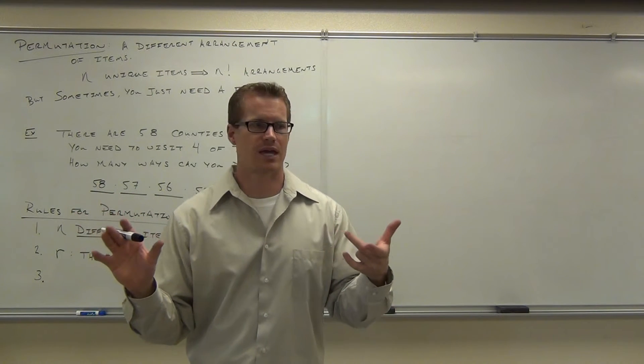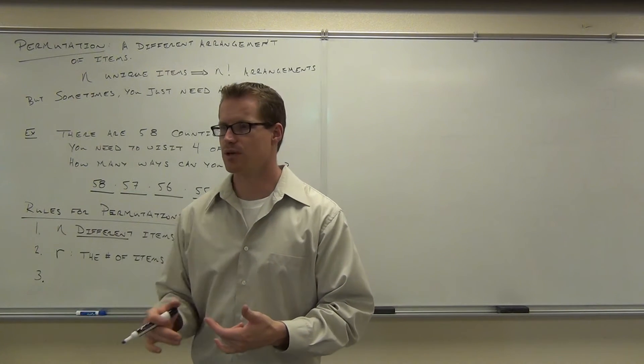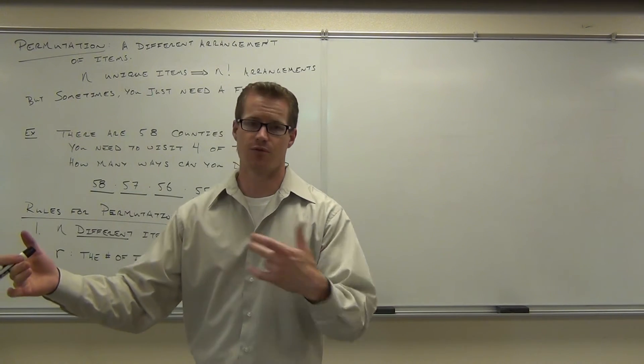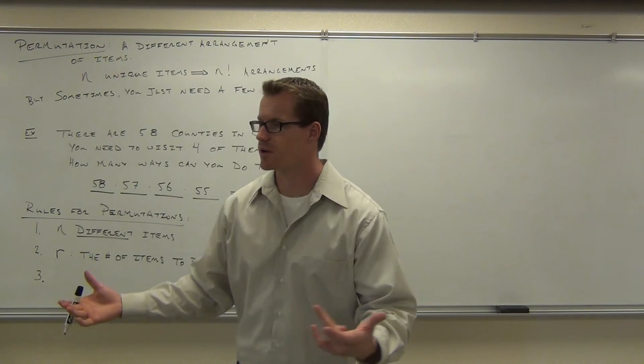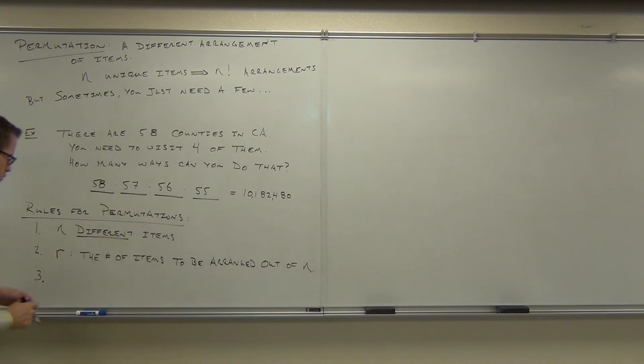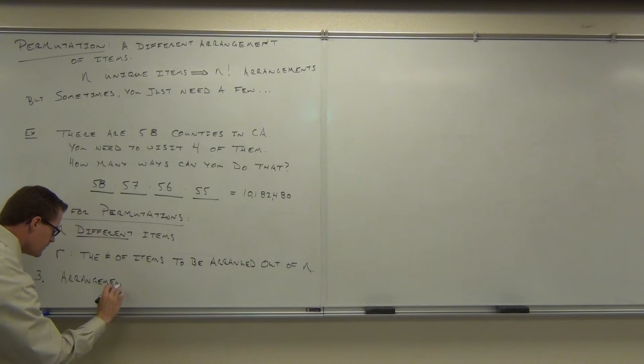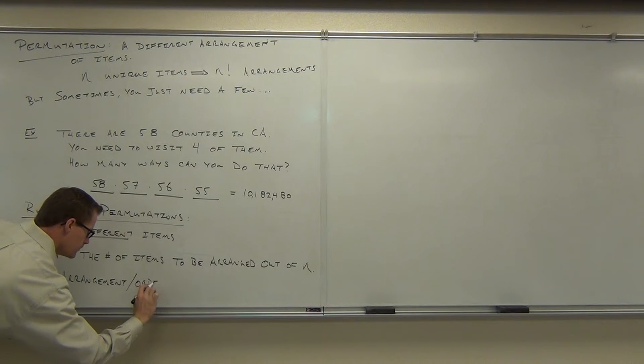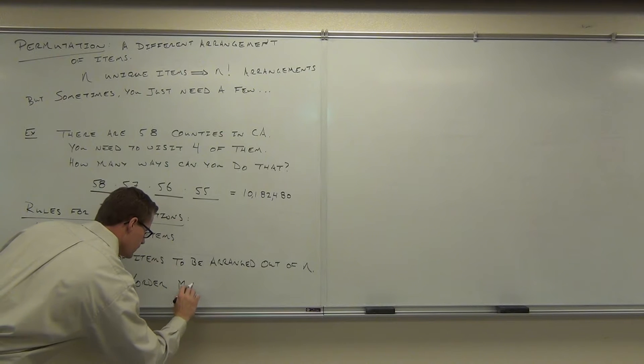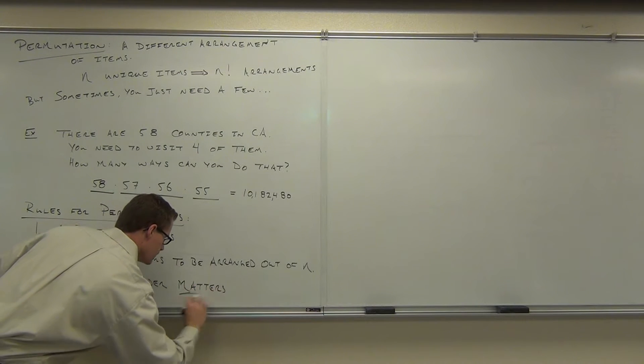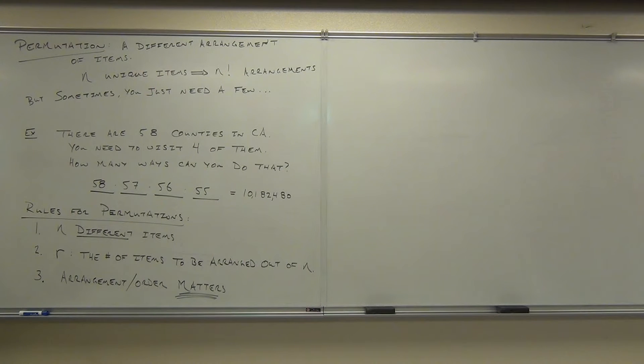So, because maybe on the campaign trail, visiting Fresno before LA would give you a different outcome than visiting LA before Fresno for some reason. Maybe the timing would just work out different. So, that arrangement would matter for permutations. So, first, the items are different. Second, R means the number of items that you're arranging out of the n. And third, the arrangement or the order is definitely very important here.